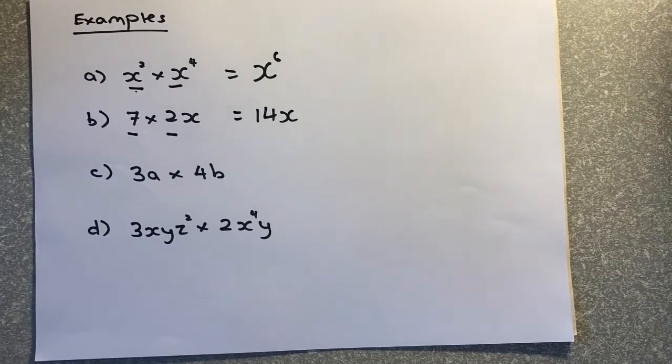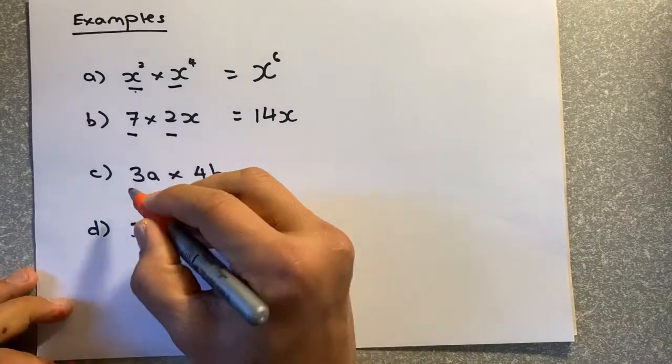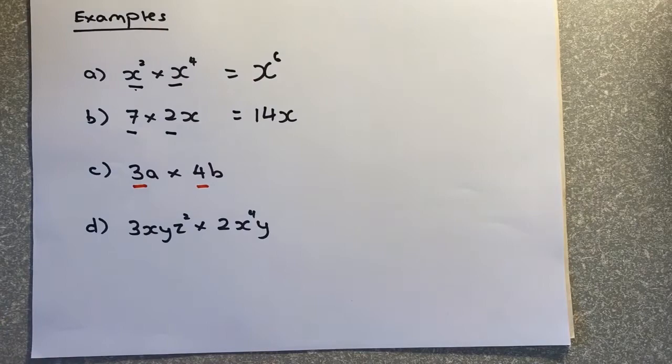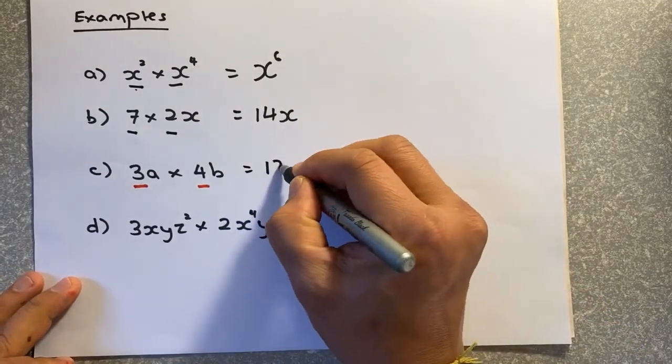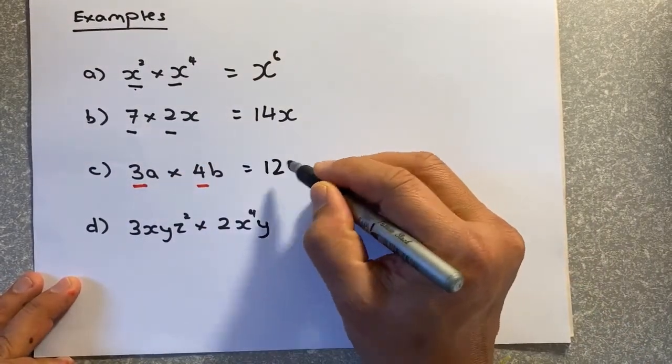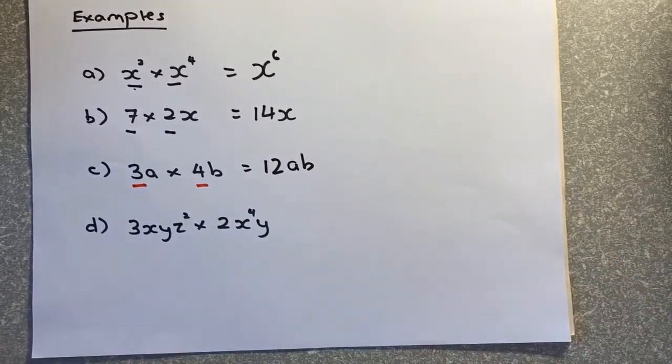Next example. Getting harder now. So what you do, you take 3 multiplied by 4, numbers with numbers, that will give you 12, that's 1a, and that's 1b, and that will be your answer.